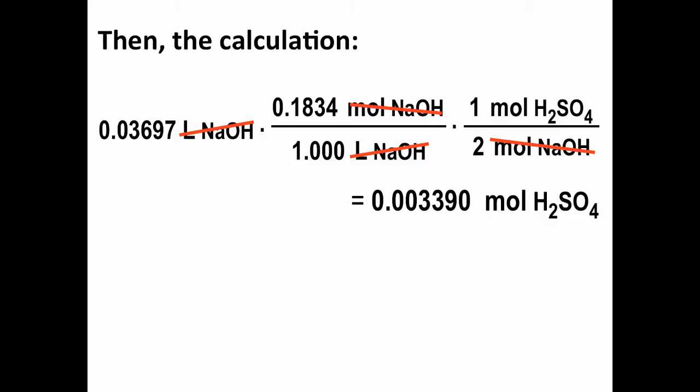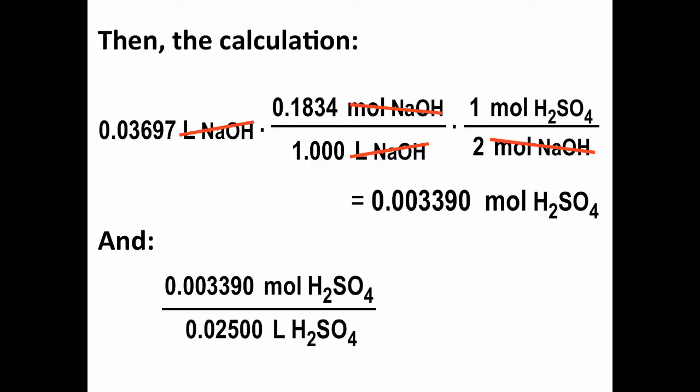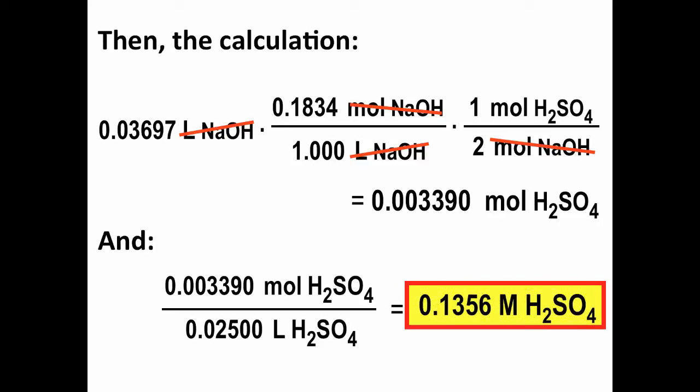Now, we're not done yet. The problem asked for the concentration, or molarity, of the sulfuric acid solution. So, what we do next is, we remember that molarity is moles per liter, moles of H2SO4 solution, or moles of H2SO4 in, in this case, 25 milliliters, or 0.02500 liters of H2SO4 solution. And when we do that calculation, we get 0.1356 moles per liter, or we often write it 0.1356 molar, capital M, H2SO4.